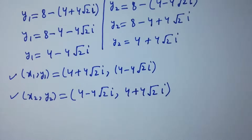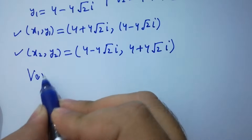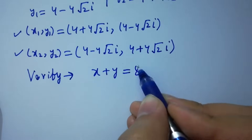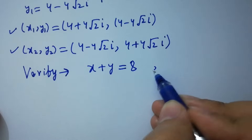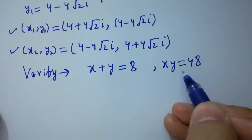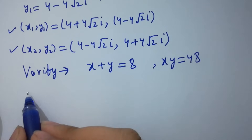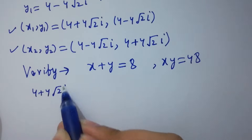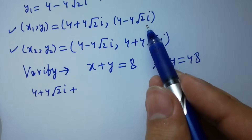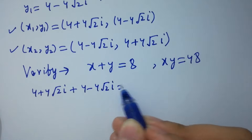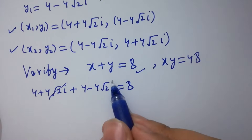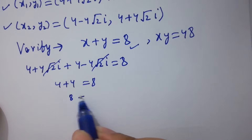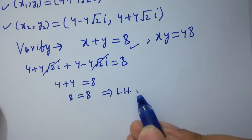In the next step, I am going to verify x plus y equal to 8 and x times y equal to 48, which are equation 1 and equation 2. First, checking x plus y equal to 8: x is 4 plus 4 square root of 2 i, and y is 4 minus 4 square root of 2 i. Adding them: the 4 square root of 2 i terms cancel, and we have 4 plus 4 which is 8. So 8 equals 8 — left hand side equals right hand side.